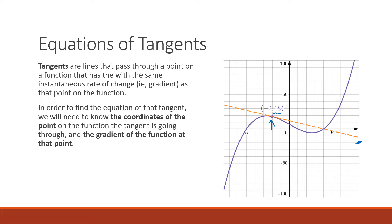In order to find the equation of a tangent we need to know two things: the coordinates of the point that our tangent is going through, and the gradient — our m value. Because we're using calculus and derivatives, we need to find the derivative of our function at that point.